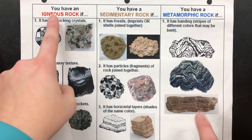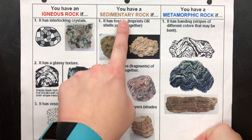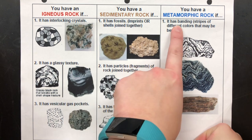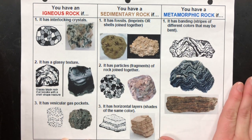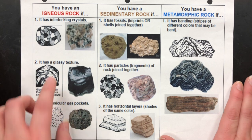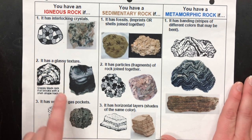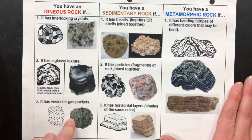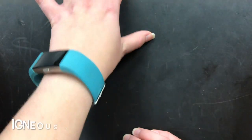We have igneous, sedimentary, and metamorphic. We know we have an igneous rock if it has interlocking crystals, a glassy texture, or gas pockets. Let's talk about the igneous rocks now.